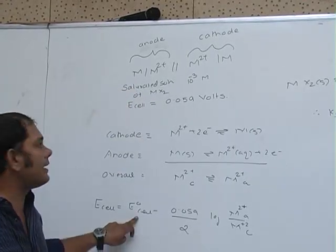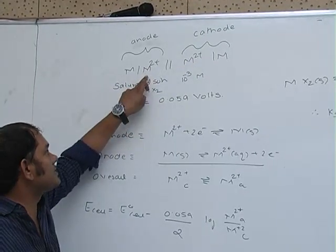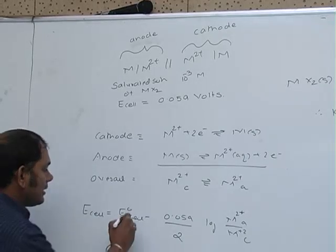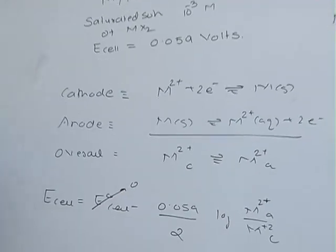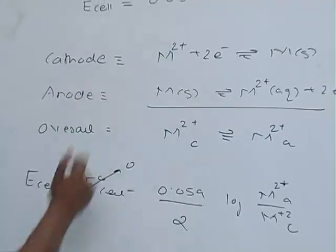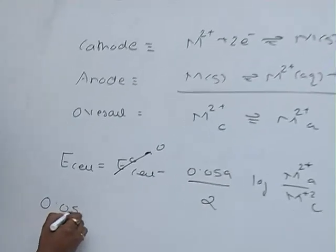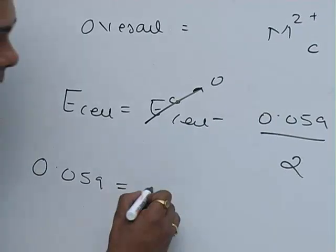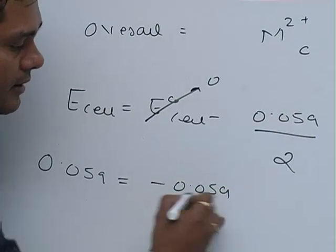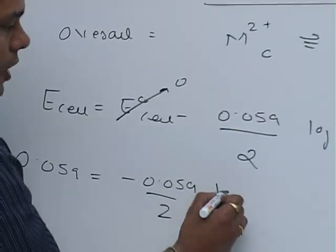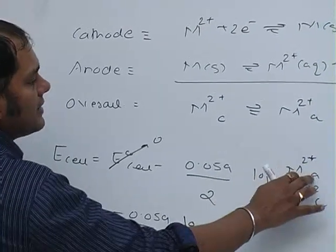E°_cell equals SRP of cathode minus SRP of anode, which is zero. Therefore, E_cell which is given as 0.059 equals minus 0.059 by 2 log M²⁺ at the anode.